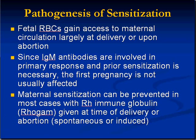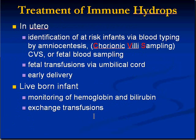Treatment of immune hydrops can be done in utero by identifying patients at risk with chorionic villus sampling and then giving fetal transfusions to the umbilical cord. The earlier you deliver the baby, the more likely you are to save its life, but then you have to consider the pulmonary sequelae as well. One of the most common reasons for an exchange transfusion would be in a live-born infant with immune hydrops, in which you're monitoring hemoglobin and bilirubin.